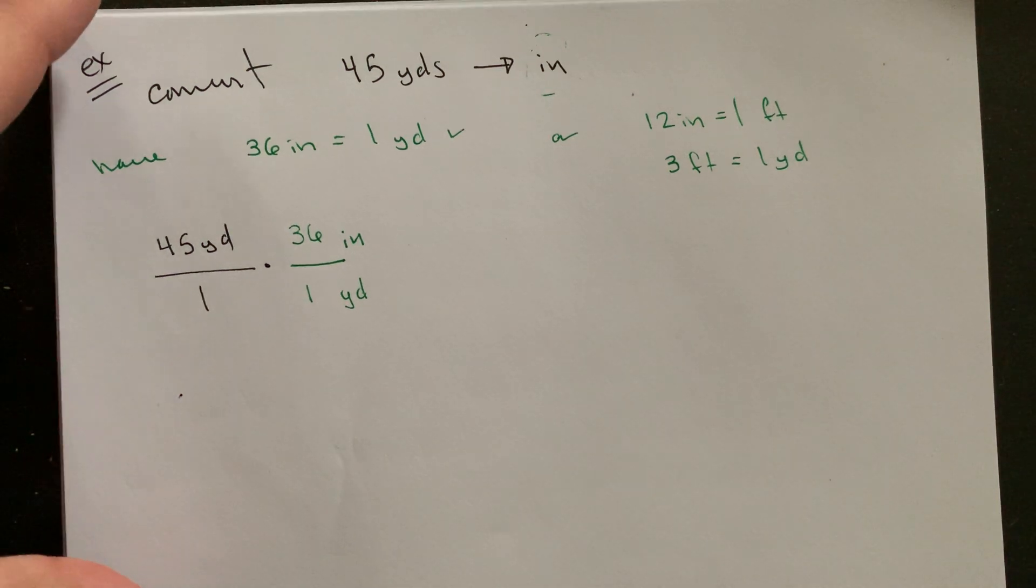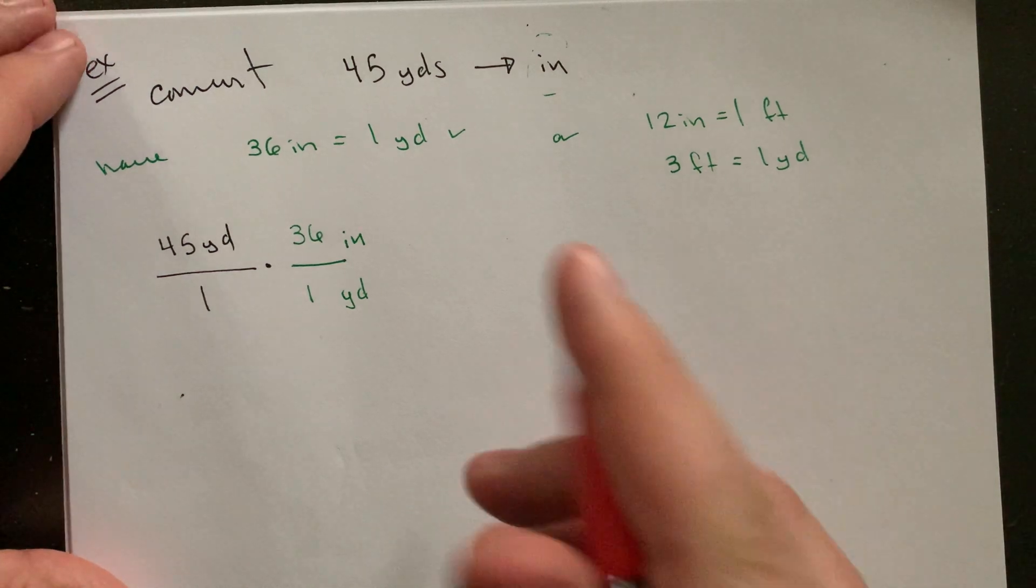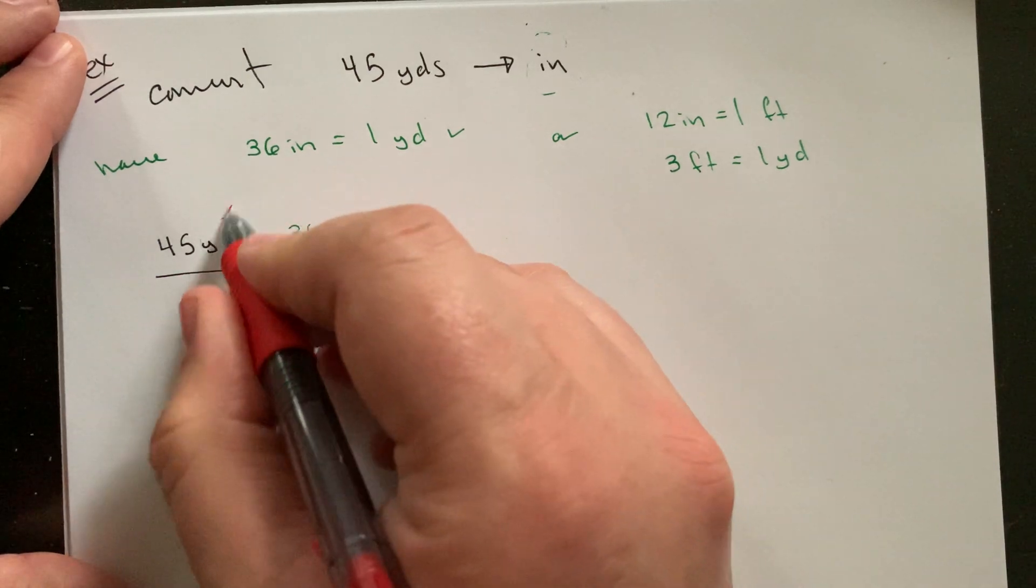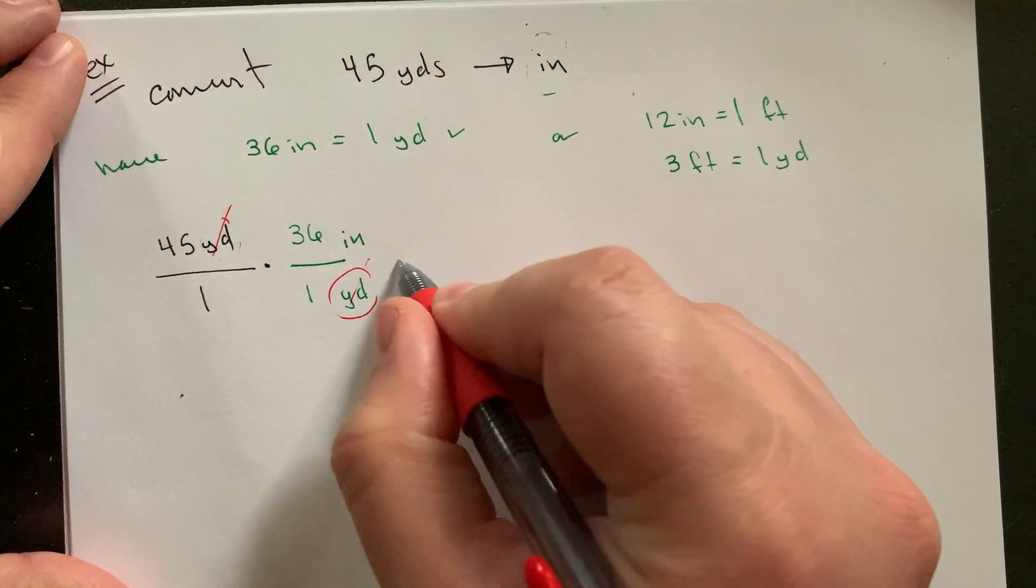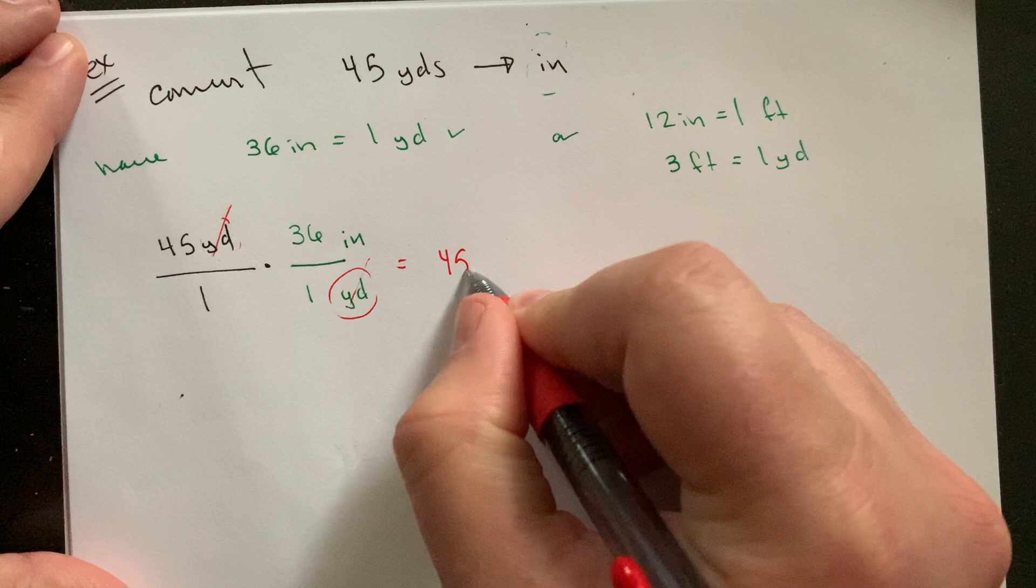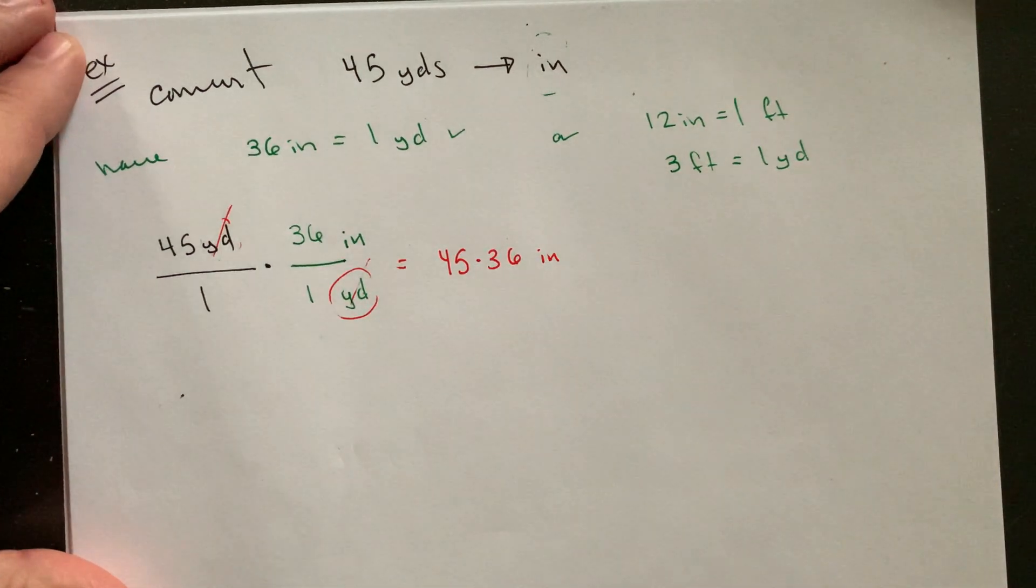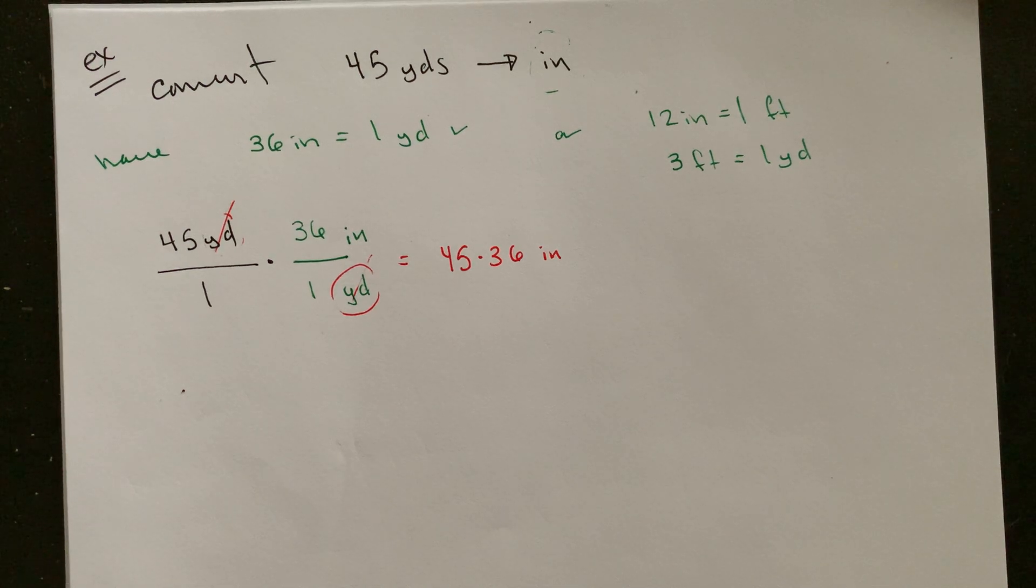And that can help, having that in mind can help to make it clear about are we going to end up with a multiplication problem, which we have here, or maybe more of a division problem. So in this case, this is 45 times 36. Gosh, what the heck is that going to be?